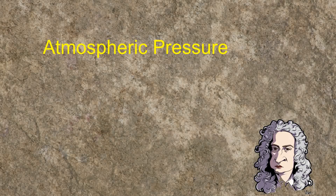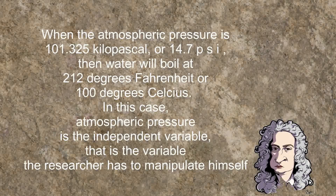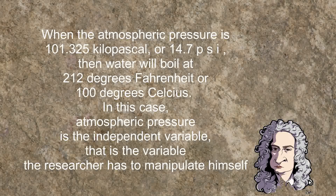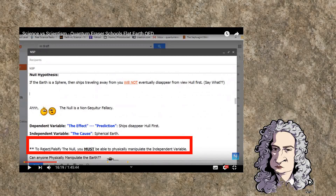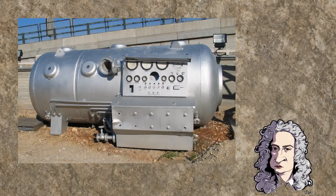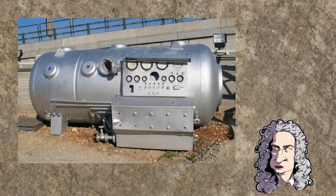So the only thing left is atmospheric pressure. The hypothesis would go somewhat as follows: when the atmospheric pressure is 101.325 kilopascal, or 14.7 psi, then water will boil at 212 degrees Fahrenheit or 100 degrees Celsius. In this case, atmospheric pressure is the independent variable — that is the variable the researcher has to manipulate himself. However, Quantum Eraser has said himself that to reject or falsify the null, you must be able to physically manipulate the independent variable. It is impossible for a researcher to physically manipulate the atmospheric pressure without creating man-made, and therefore non-natural, circumstances.